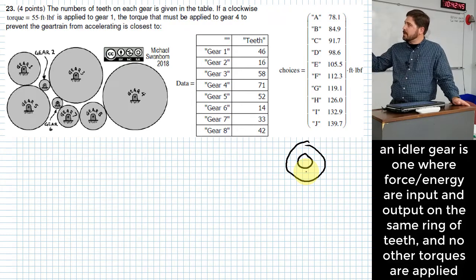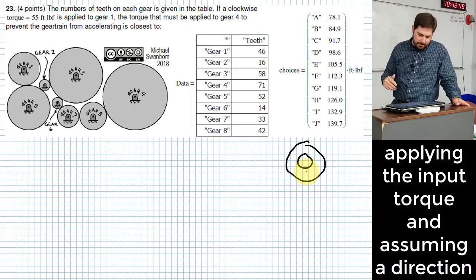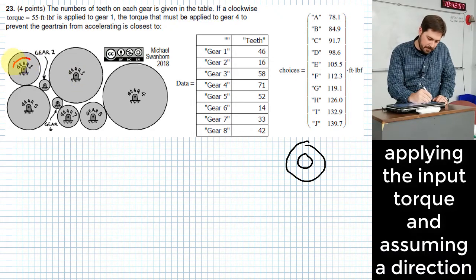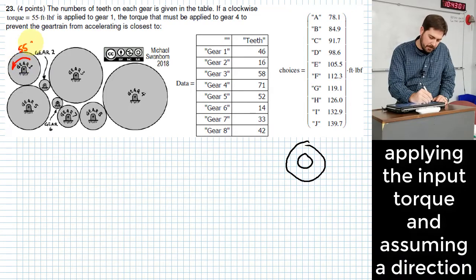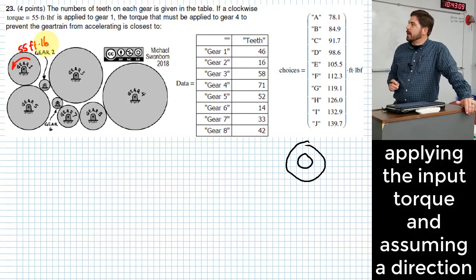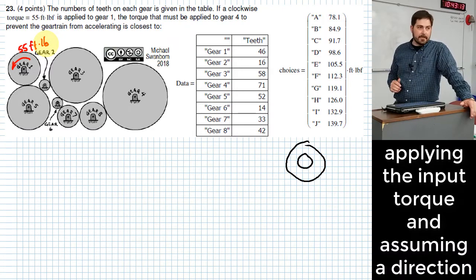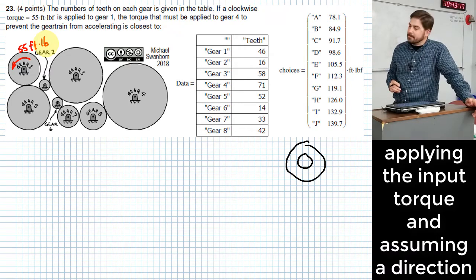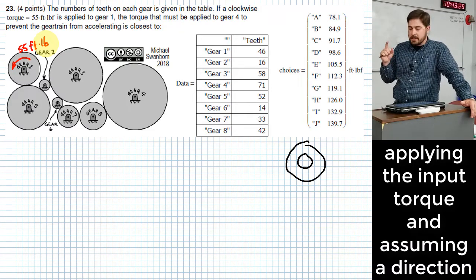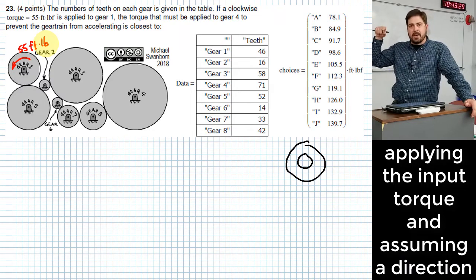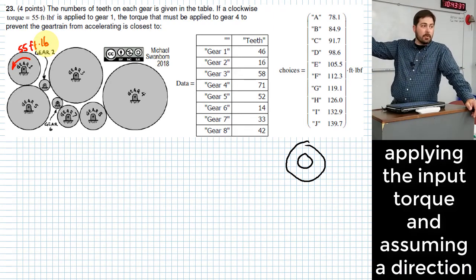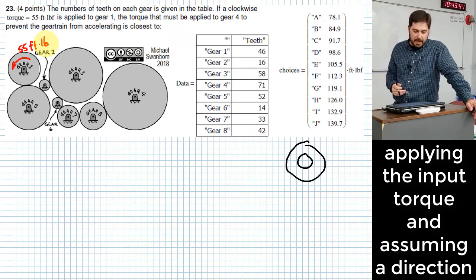When you had the two gears attached to each other, they would have the same speed and transmit basically the same torque as each other. You'll notice none of the ones I've got on this gear train are compound gears. It says a torque of 55 foot-pounds is applied to gear one, and it wants to know what is the torque that must be applied to gear four to prevent the gear train from accelerating. They were kind to us a little bit on this problem because it does not ask anything about direction.